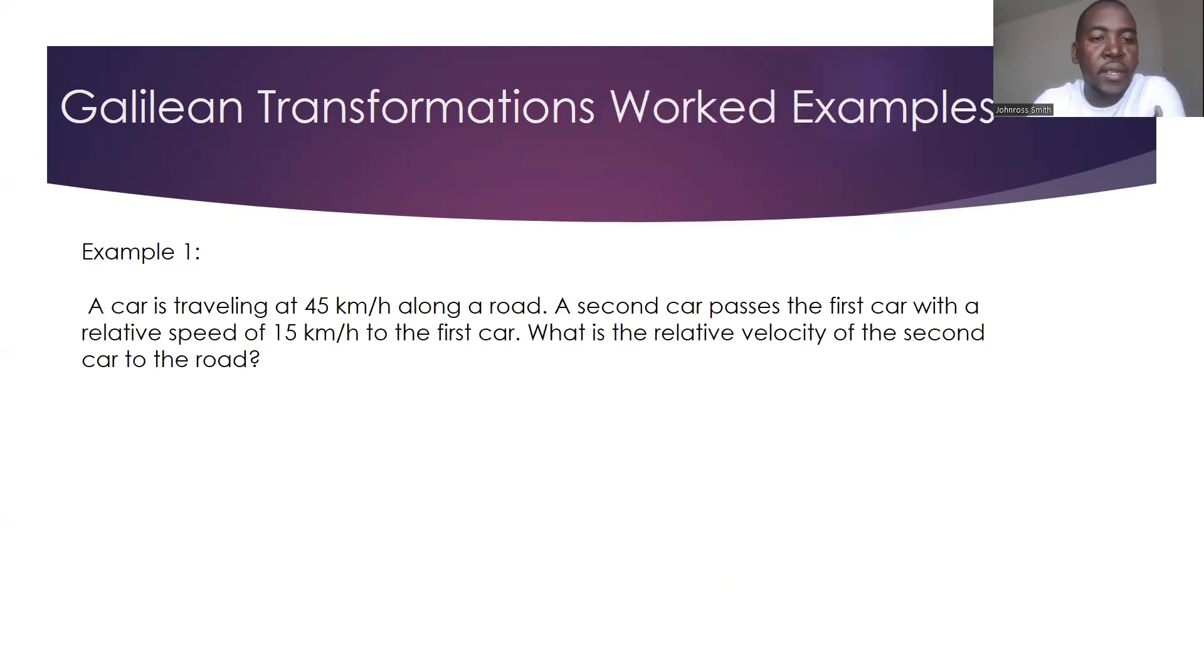So a car is traveling at 45 kilometers per hour along a road. A second car passes the first car with a relative speed of 15 kilometers per hour to the first car. What is the relative velocity of the second car to the road? So notice that the first car is 45, so it's a different reference frame. The second car is moving at a different speed.